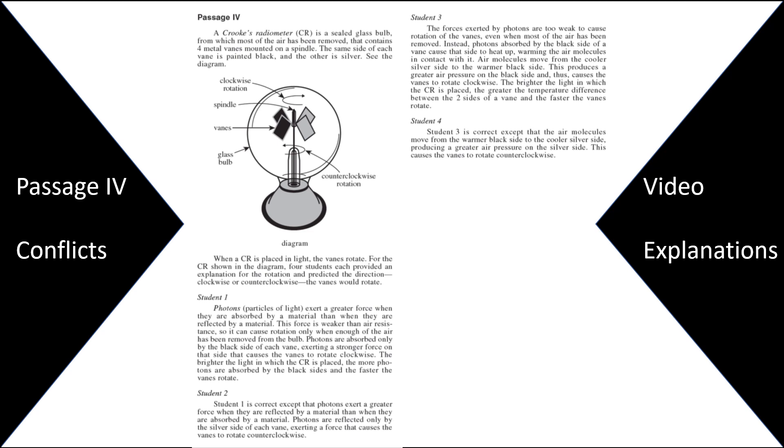This is passage six. It's a conflicts passage. We know it's conflicts because it's student one, student two. It's usually going to say student or scientist, maybe hypothesis or method. And you're comparing different hypotheses. When they have students, I think these are generally easier to process. There's usually three or four students, which is more information to process.